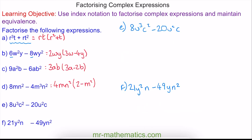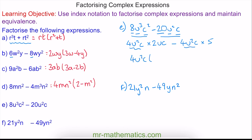For question E, we can see that 4 is common to the 8 and the 20, u squared is common to the u cubed and u squared, and c is common to c squared and c. So 4u squared c is our common factor. We multiply it by 2uc to make the first term, and by 5 to make the second term. So we have 4u squared c on the outside, with 2uc minus 5 on the inside.